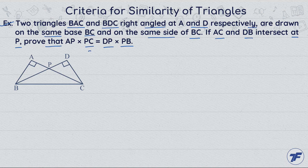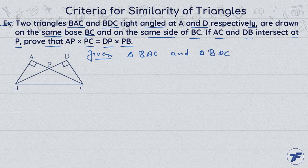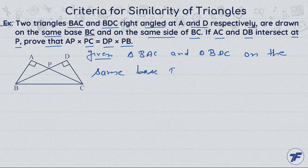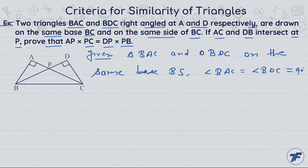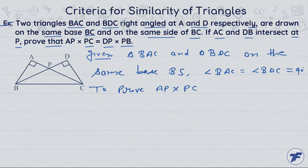Now, first of all, we always write down the Given. What do we have in Given? Triangle BAC and triangle BDC on the same base and same side BC, and angle BAC equal to angle BDC equal to 90 degrees. Now, we have to prove: AP into PC equal to DP into PB.